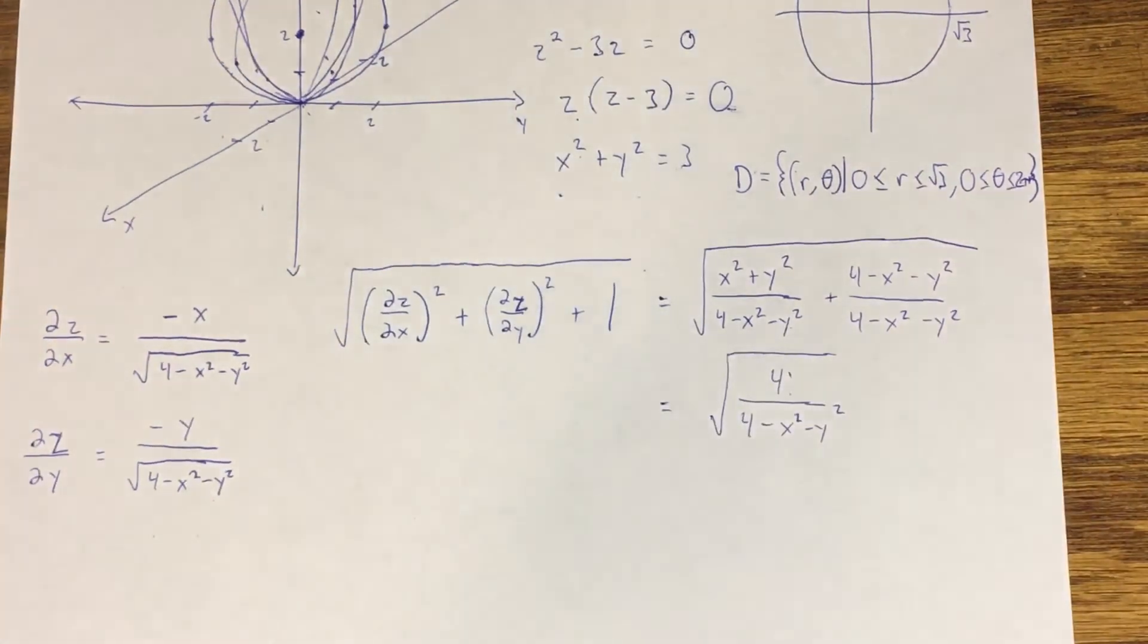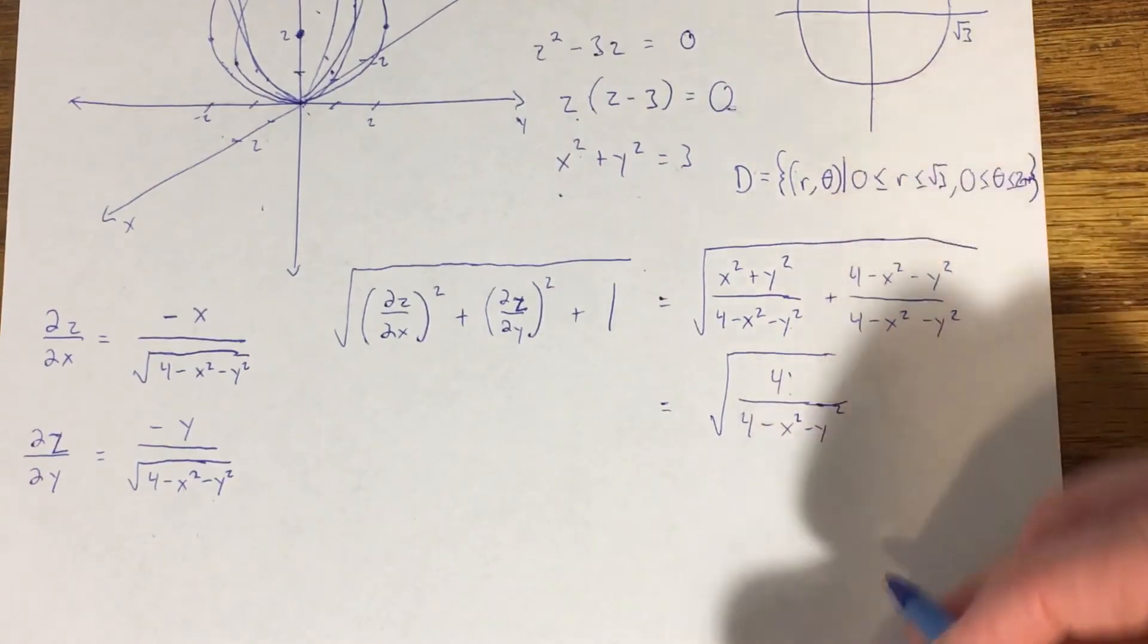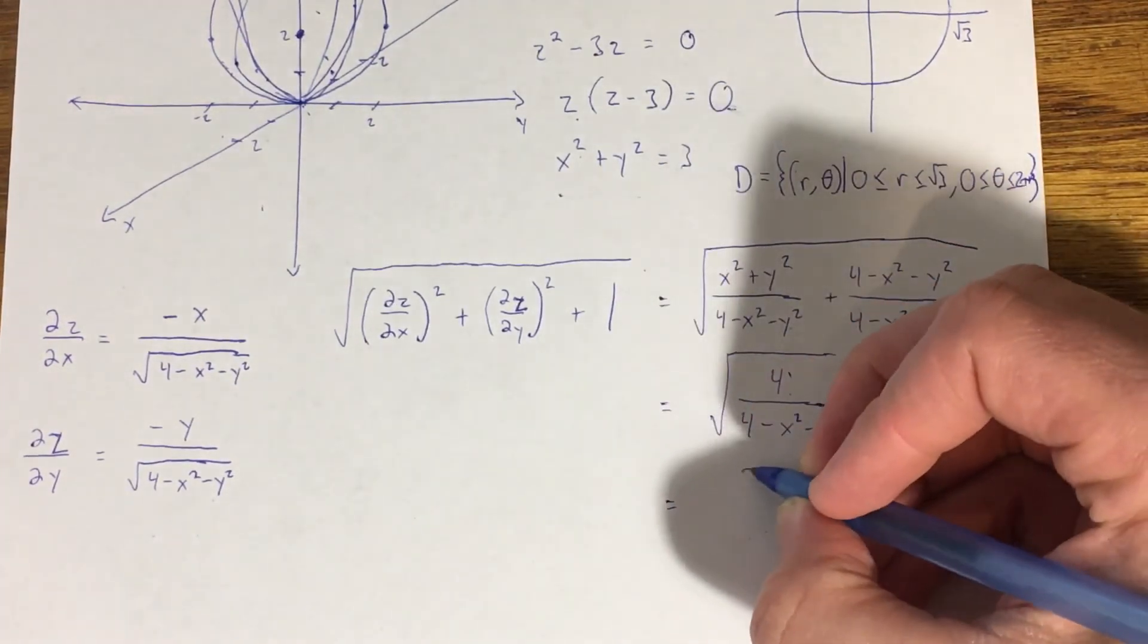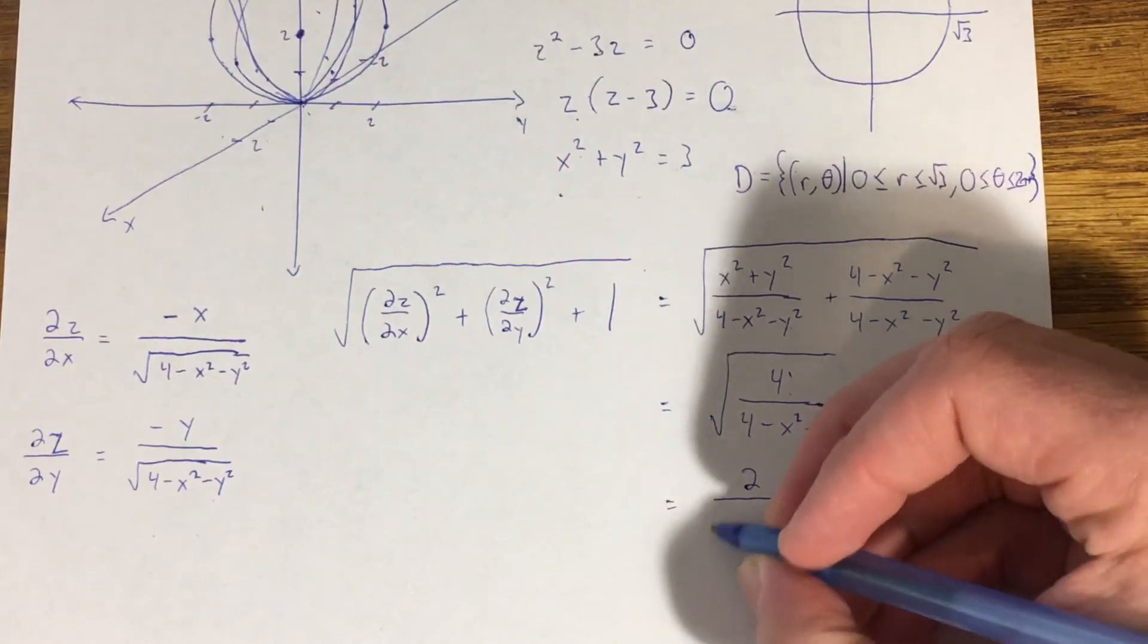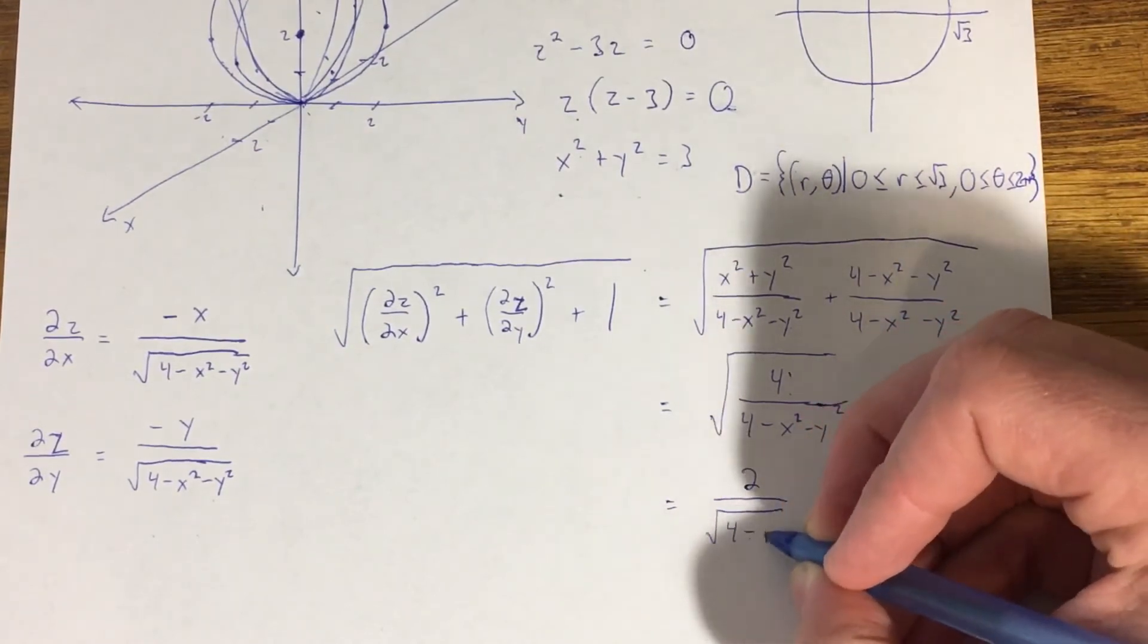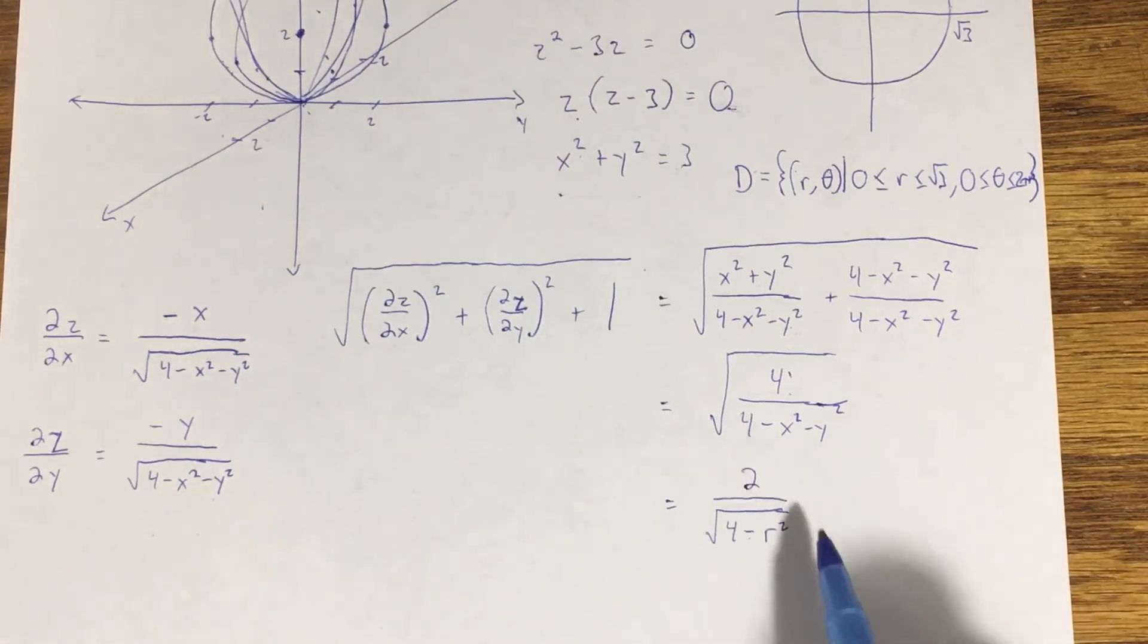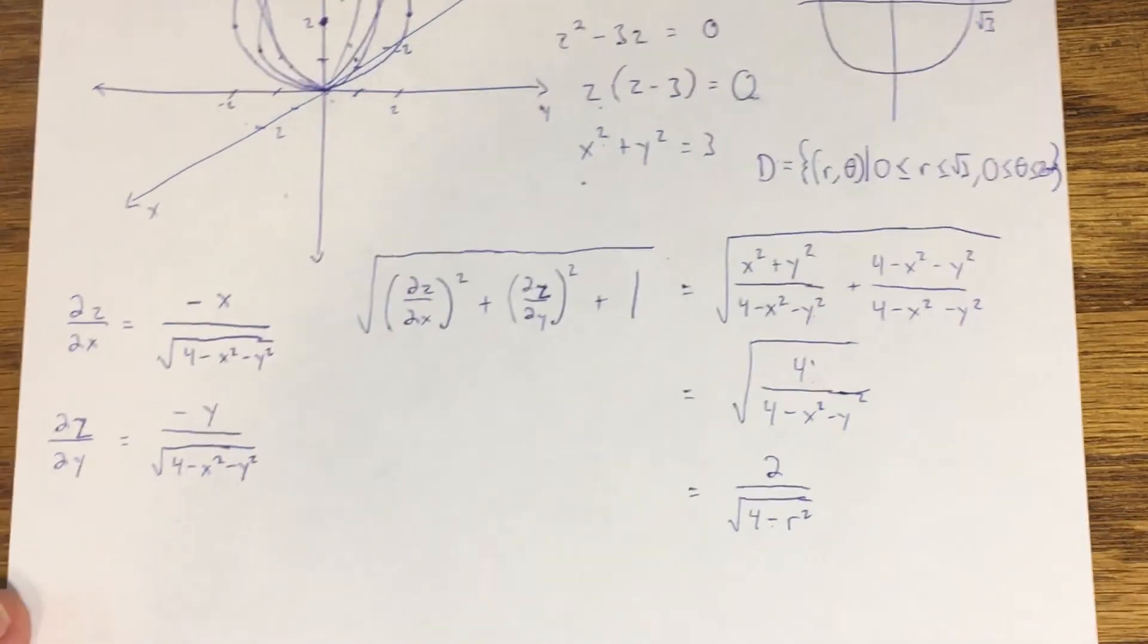Now I can do a couple of things. First of all, I can take the square root of 4 in the numerator giving me a 2. Secondly, I want to do a conversion to polar coordinates, which we suggested we were going to do. This integrand is pretty well suited for that—negative x squared minus y squared is negative r squared. This whole thing simplifies down to 2 over the square root of 4 minus r squared.